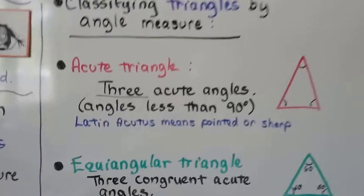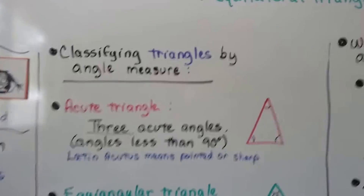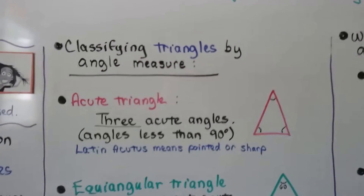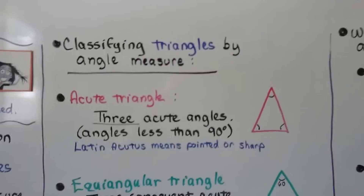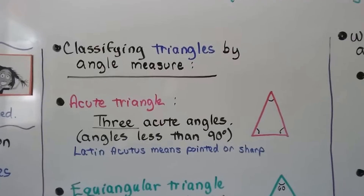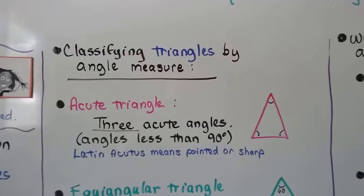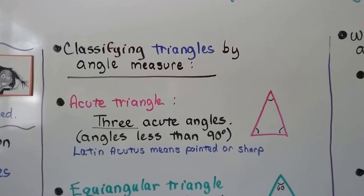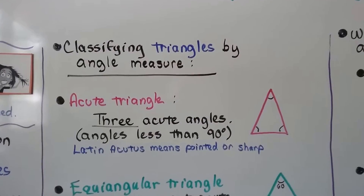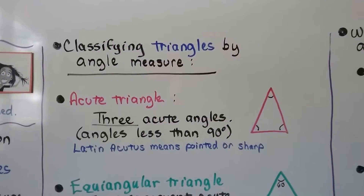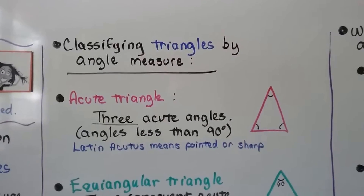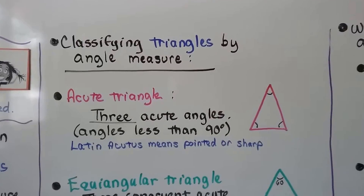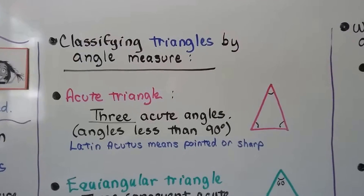Classifying triangles by angle measure: we've got an acute triangle that has three acute angles — not one, three acute angles. Those are angles less than 90 degrees. It's named from the Latin acutis, which means pointed or sharp.